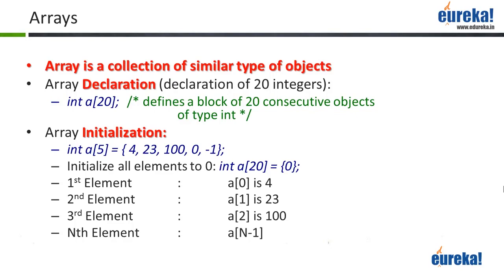So let's say I want 100 integers. I can say int, followed by a variable name — in this case 'a' — and then within square brackets I can say 100. In the example here, I've declared 20 integers, so I have int a[20]. And like I said, if this is a local variable, they'll all have junk values, so I may want to initialize them at the beginning.